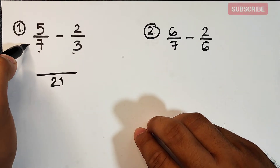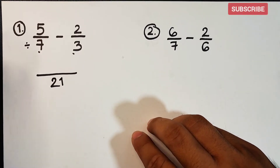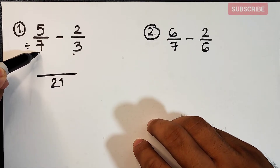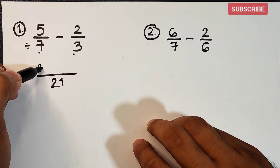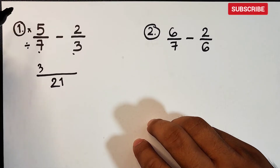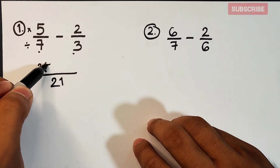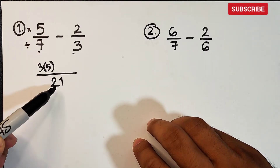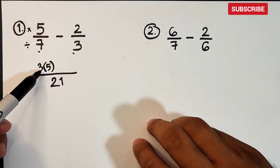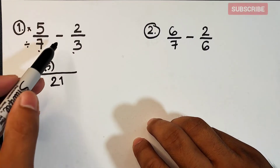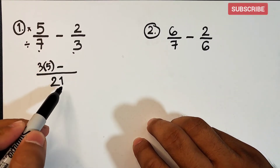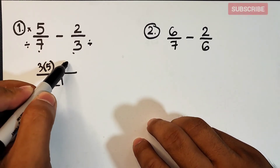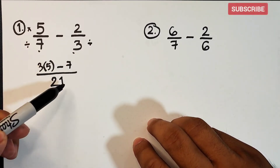What you need to do is divide the LCD by the original denominator. So 21 divided by 7 is 3, then multiply by the numerator, which is 5. So I got 3 from 21 divided by 7, and that is 3 times 5. Then minus: 21 divided by 3, then multiply by 2.